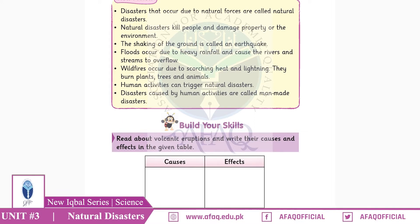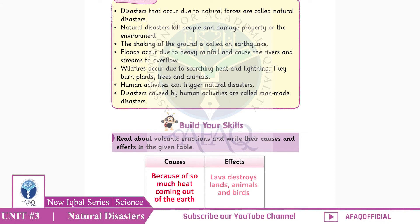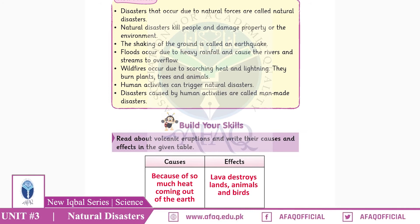Volcanic eruption occurs because of so much heat coming out of the earth's surface. Its effects include lava and magma coming out, which destroys land, properties, animals, and birds.